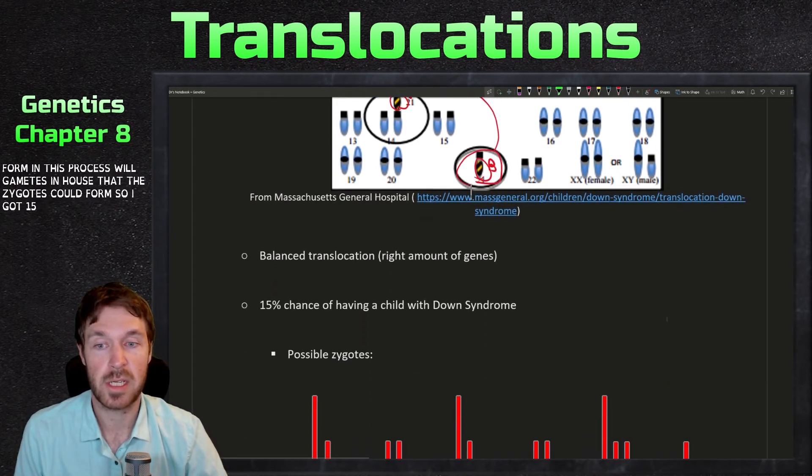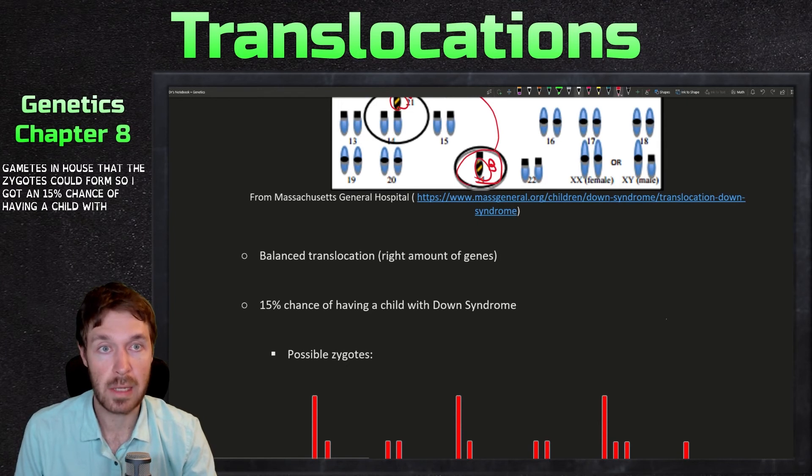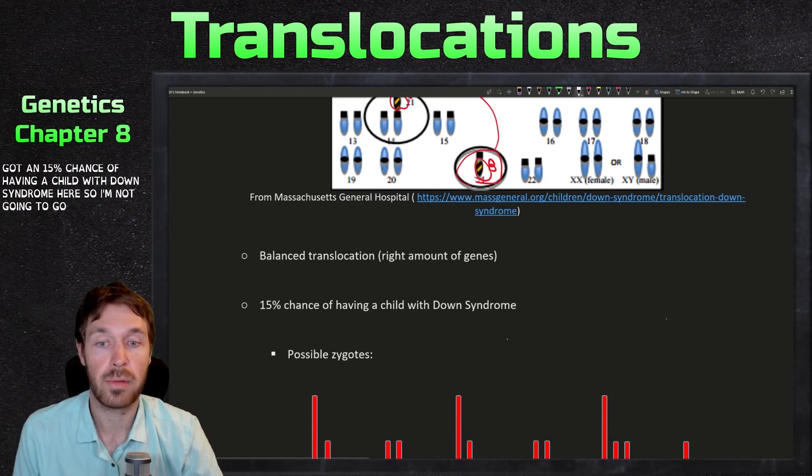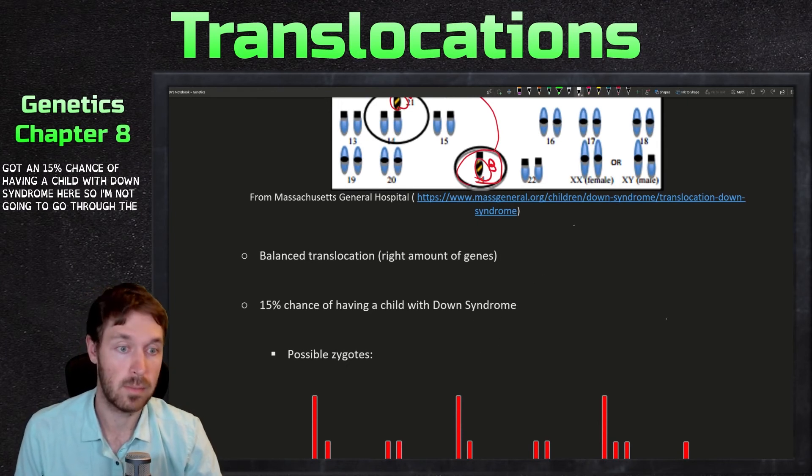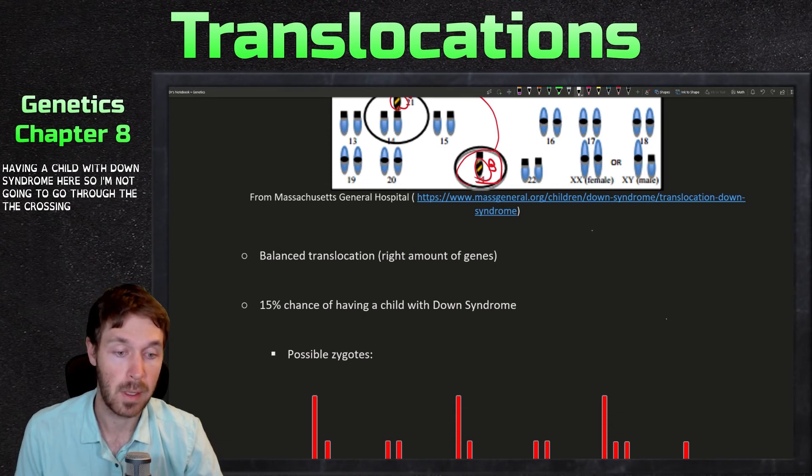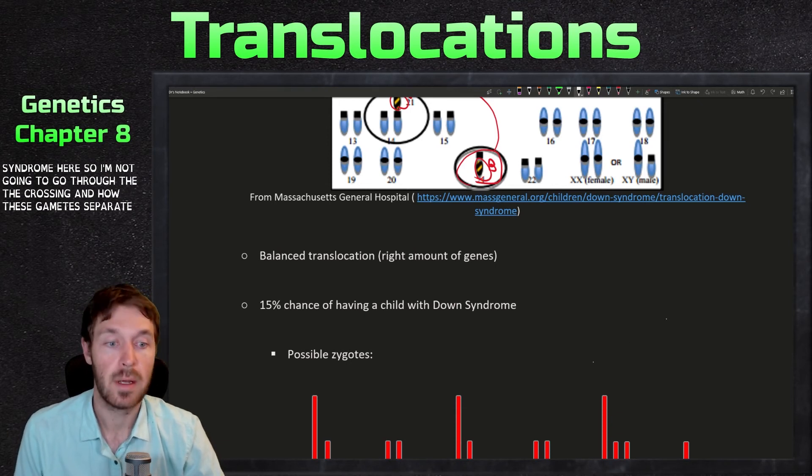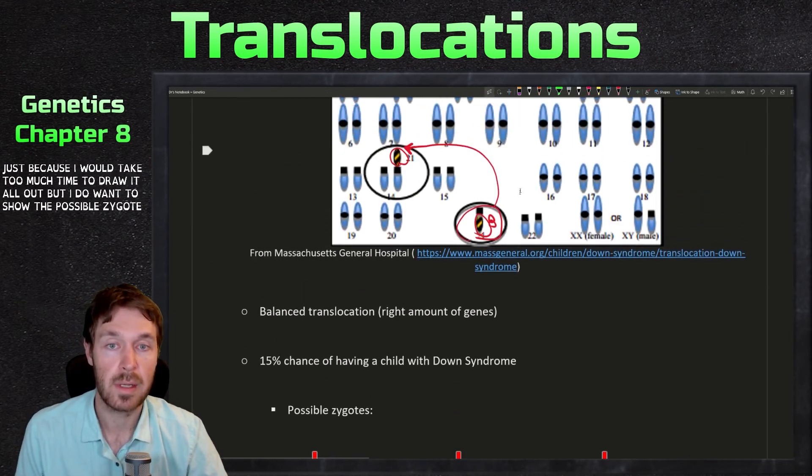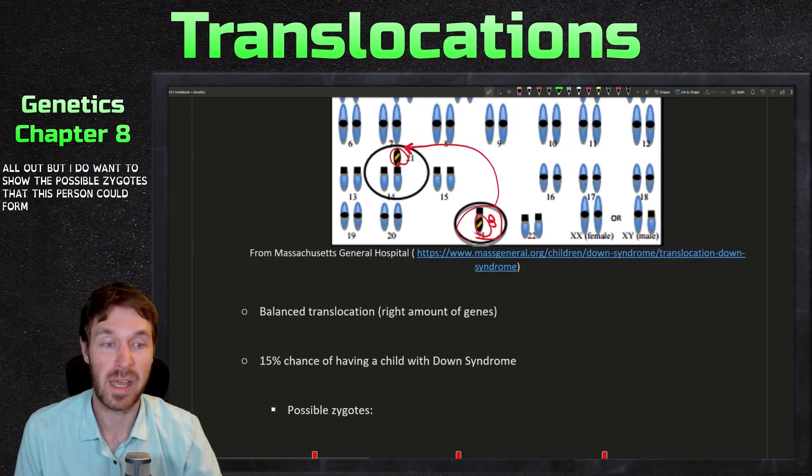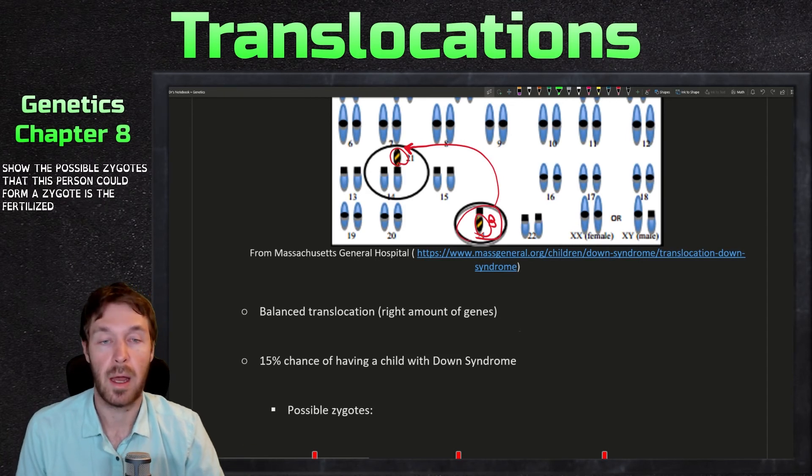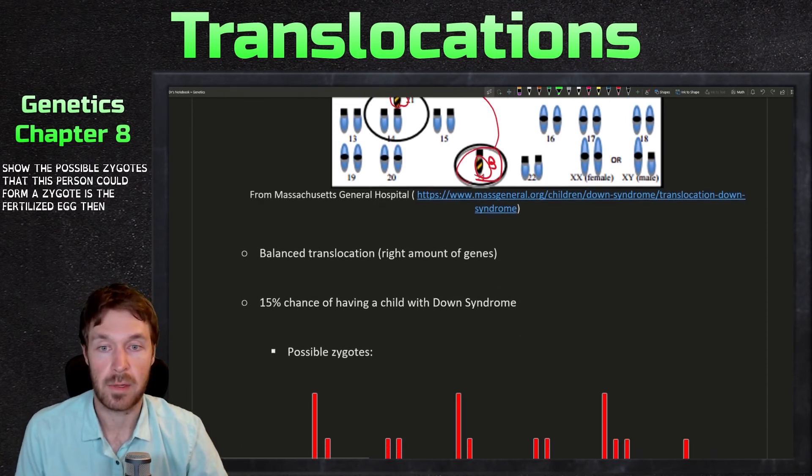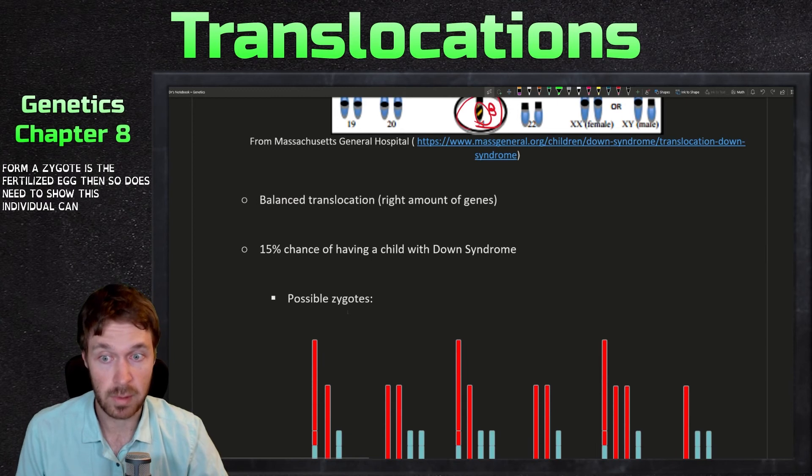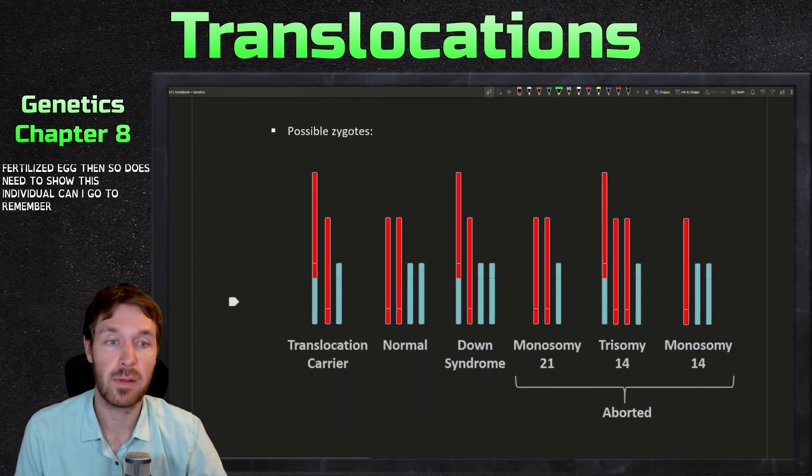So again, 15% chance of having a child with down syndrome here. So I'm not going to go through the crossing and how these gametes separate just because that would take too much time to draw it all out. But I do want to show the possible zygotes that this person could form. So zygote is the fertilized egg then. So it doesn't just show this individual gametes, but this is the zygotes. Remember now these are the ones that could form. First one here is a translocation carrier.